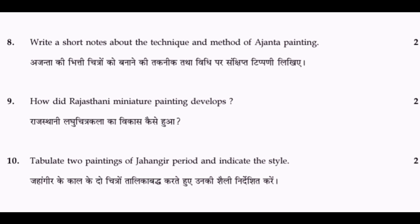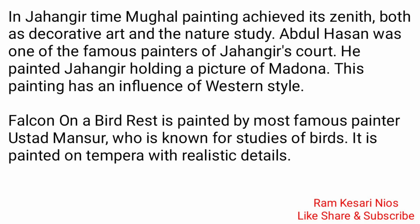Question 10: Tabulate two paintings of the Jahangir period and indicate the style. During Jahangir's time, Mughal Painting achieved its zenith both as decorative art and nature study. Abdul Hassan was one of the famous painters of Jahangir's court. He painted Jahangir holding a picture of Madonna — this painting has an influence of western style. Falcon on a Bird Rest is painted by the famous painter Ustad Mansoor, known for studies of birds, painted on tempera with realistic details.